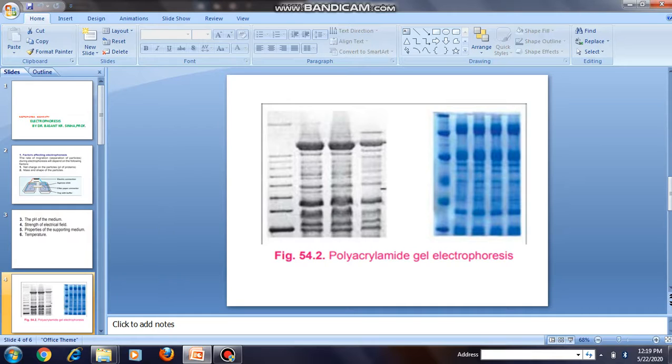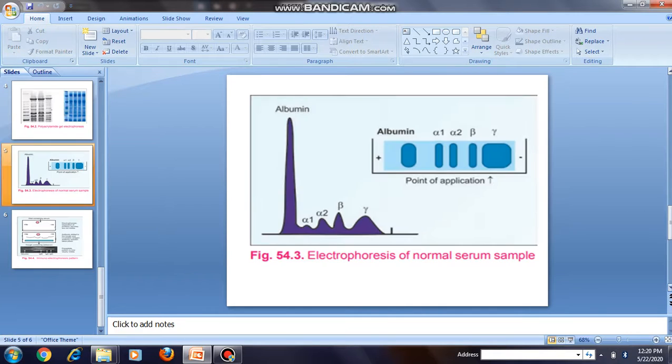The factors affecting electrophoresis include net charge on the protein particles and the properties of the supporting medium. The properties of the supporting medium affect the electrophoretic activity and its efficiency. The supporting medium are of different types.